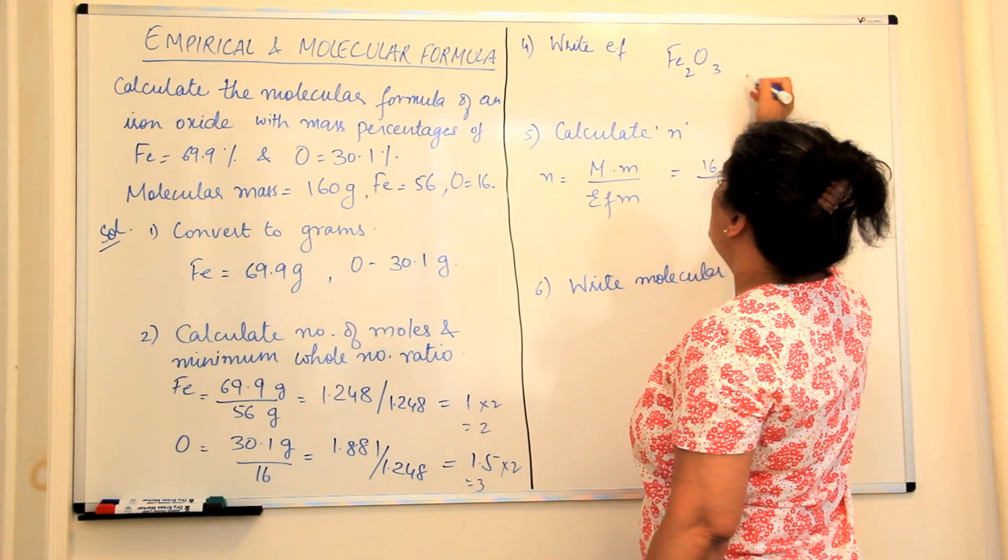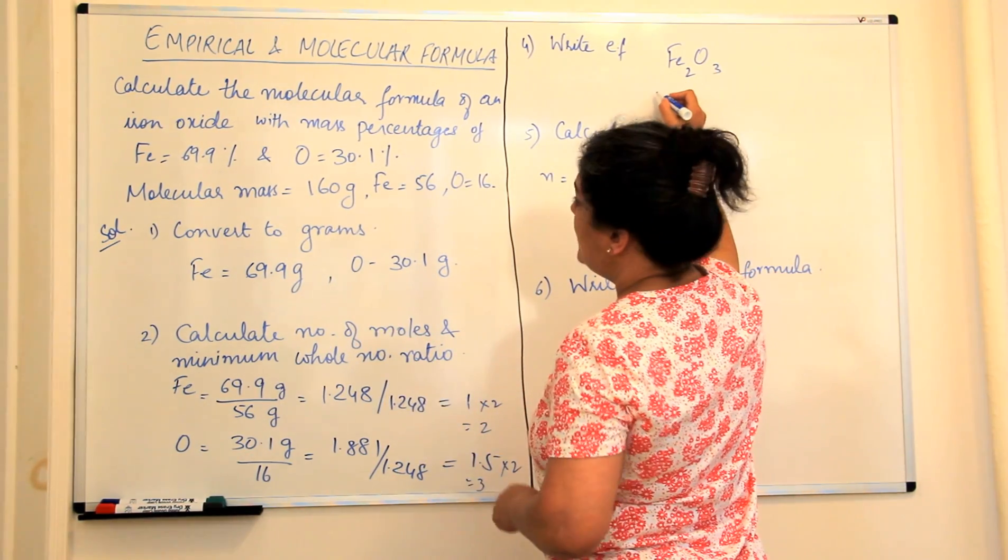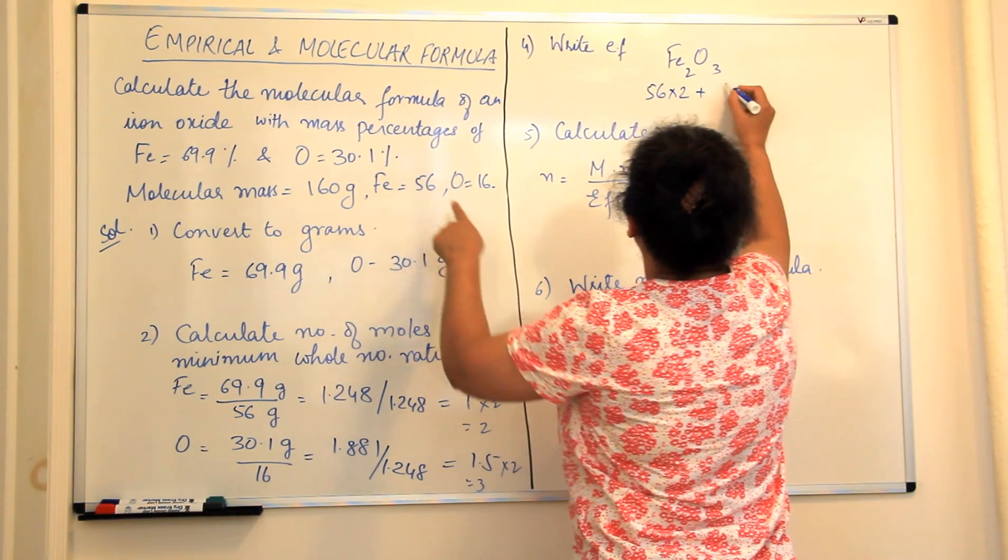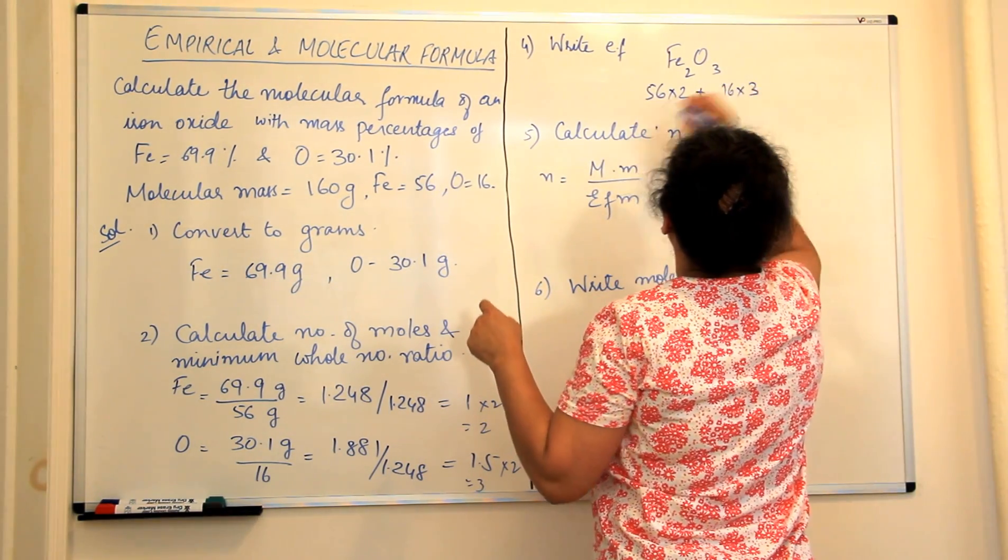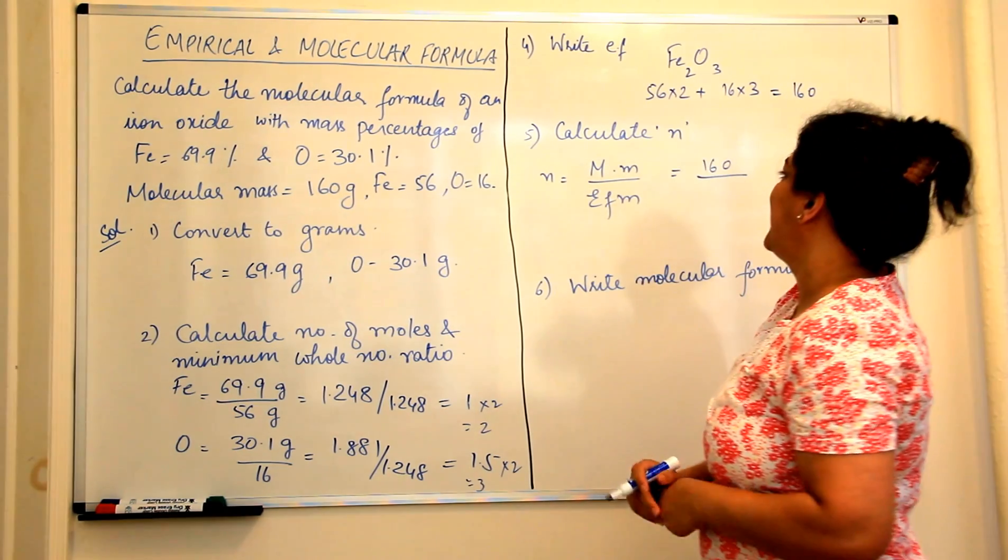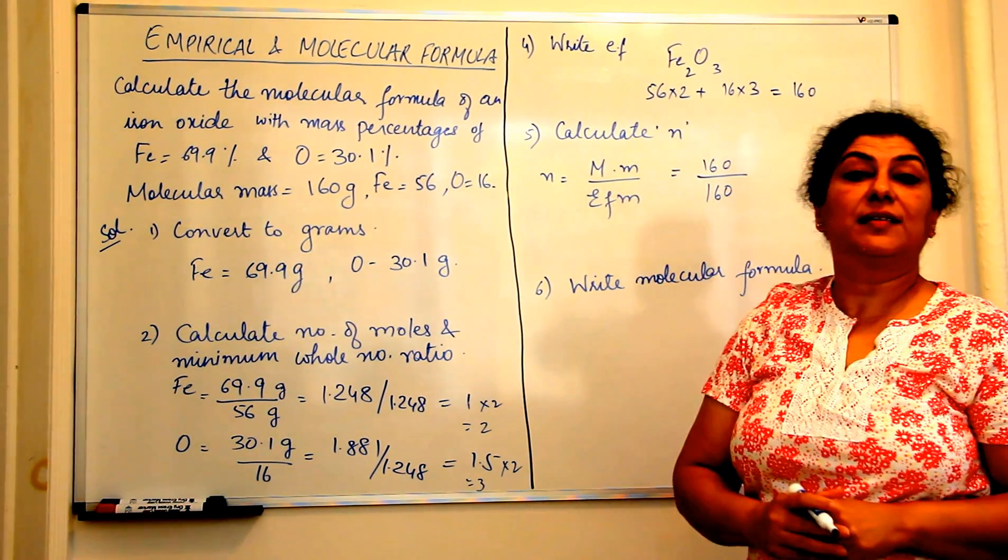The empirical formula is Fe2O3. So let's calculate its mass. Fe is what's the mass of iron? 56. 56 into 2 plus oxygen is 16 into 3. This would also come to be equal to 160 which means empirical formula mass and molecular mass are the same.